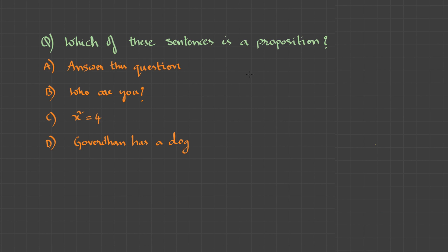So we are done with the basics of propositional logic. Let's take a few questions. Which of these is a proposition? 'Answer this question' is a command — therefore not a proposition. 'Who are you?' is a question — so not a proposition. 'X squared equals 4' is an open statement — therefore no. 'Gowardhan has a dog' — he might have a dog or may not, so it could be either true or false. Therefore this is the proposition, and the answer is D.